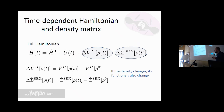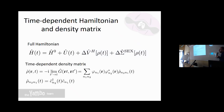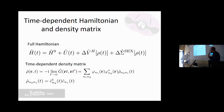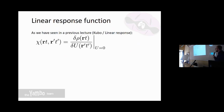Now we have a time-dependent variation of the electron-electron interaction. We switch to the time-dependent density matrix — which you have seen already — and we can take it easily from the Green's function evaluated at equal times. We also switch to the single-particle basis.